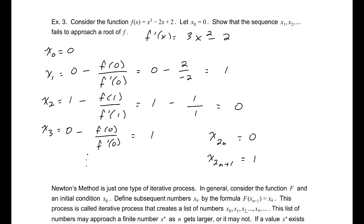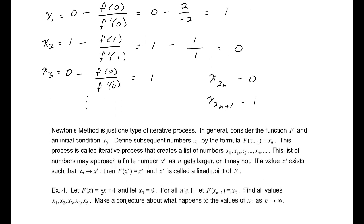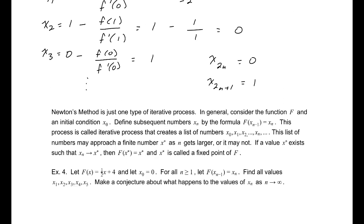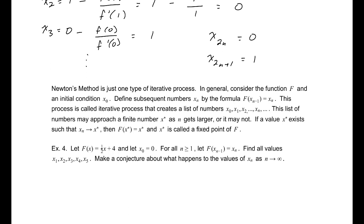Newton's method is just one type of iterative process — there are lots of ways to actually approximate roots. We're going to consider a function f with an initial condition x naught, and define subsequent numbers xₙ by the formula f of xₙ₋₁ equals xₙ. This creates a list of numbers x₀, x₁, x₂ through xₙ and on. This list may approach a finite number x star as n gets larger, or may not. If the sequence xₙ approaches x star, then f of x star equals x star — and that is called a fixed point of f, because it doesn't actually change once you get to that value.